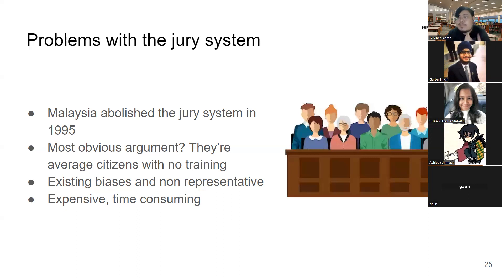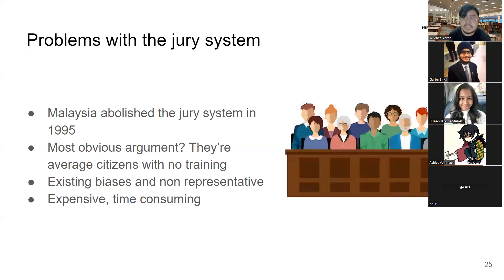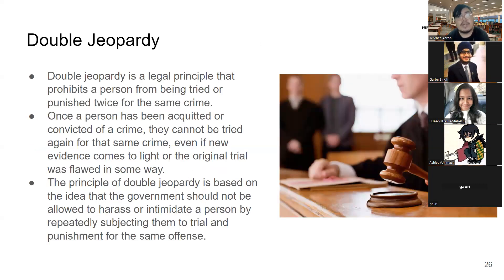Biases can be explicit or implicit. You may claim to be unbiased, but the media you consume, the stories you value, and the people you surround yourself with all influence how you think. For example, one's racialized perception of who is likely to commit a violent crime affects judgment in ways that aren't representative of reality. All of that plays out in a jury setting.